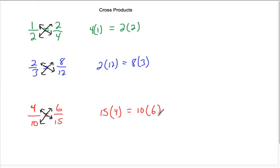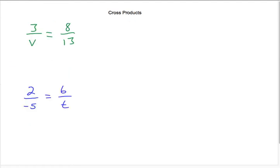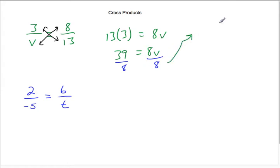Those are also called the means and the extremes, although I forget which one is which. So how do we use cross products when there's a variable? We're going to multiply diagonally, and they're going to be equal to each other. So we get 13 times 3 is going to be equal to 8V. So 13 times 3 is 39, so we have 39 equals 8V. Then we use the division property of equality to divide by 8 to isolate V. So we end up with 39 over 8, which is not reducible, equals V.